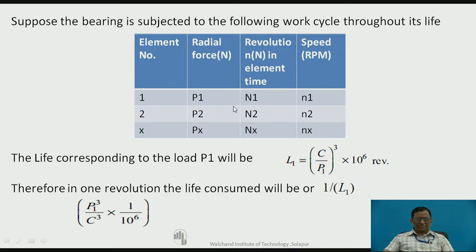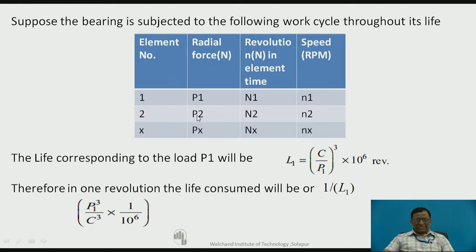If I consider load P1 only, corresponding to this load P1 the bearing will complete some L1 revolutions. There is a relationship between load and life such that L1 = (C/P1)³ × 10⁶ revolutions. But actually, in the cyclic load case, the bearing is not completing all L1 revolutions — it is completing only N1 revolutions.